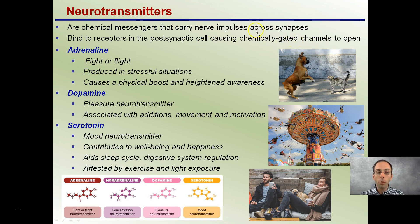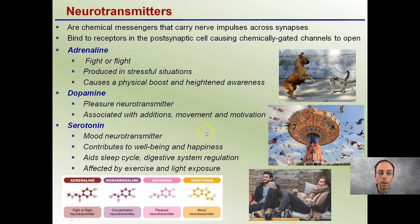Some you might be familiar with are adrenaline — that's your fight-or-flight response, produced in stressful situations. Dopamine is the pleasure neurotransmitter associated with movement and motivation. And serotonin is the mood neurotransmitter, associated with well-being and happiness; it also aids in the sleep cycle and digestive system regulation. They may look very similar, but there are distinctive differences within some of the binding that occurs between these. So adrenaline, dopamine, and serotonin are three.